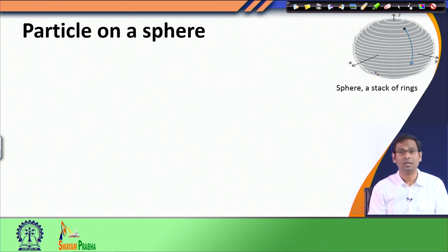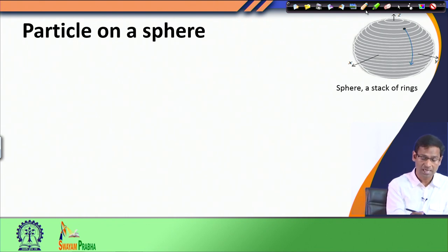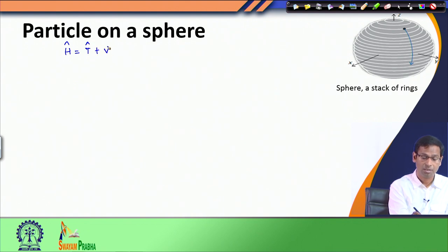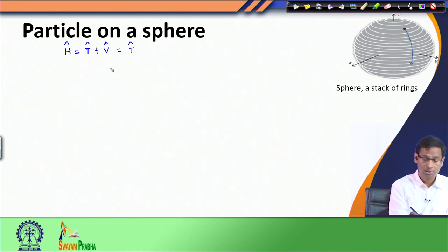We will now find the quantum mechanical solution for a particle of mass m moving on a sphere of radius r. To solve this problem we start by writing down the Hamiltonian, which has a kinetic energy operator and a potential energy operator. Just as in the particle-in-a-ring problem, we set the potential energy term to zero, meaning the particle experiences no external interaction. So the Hamiltonian is completely given by the kinetic energy operator.